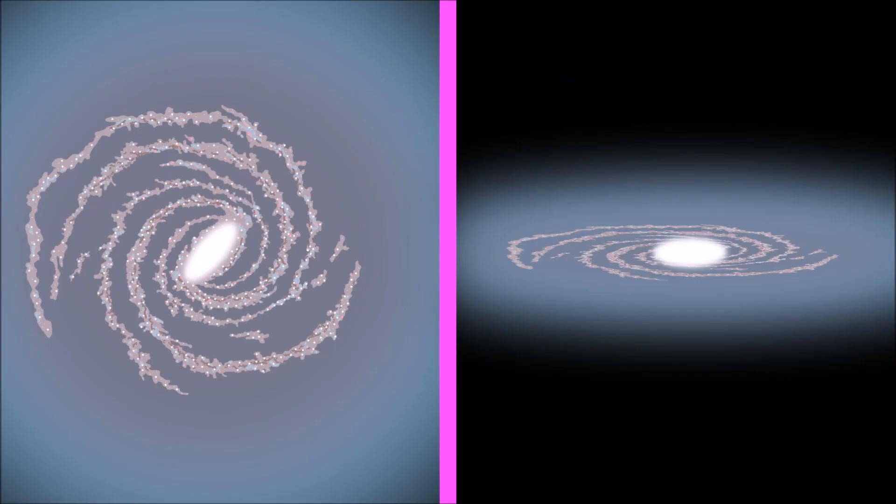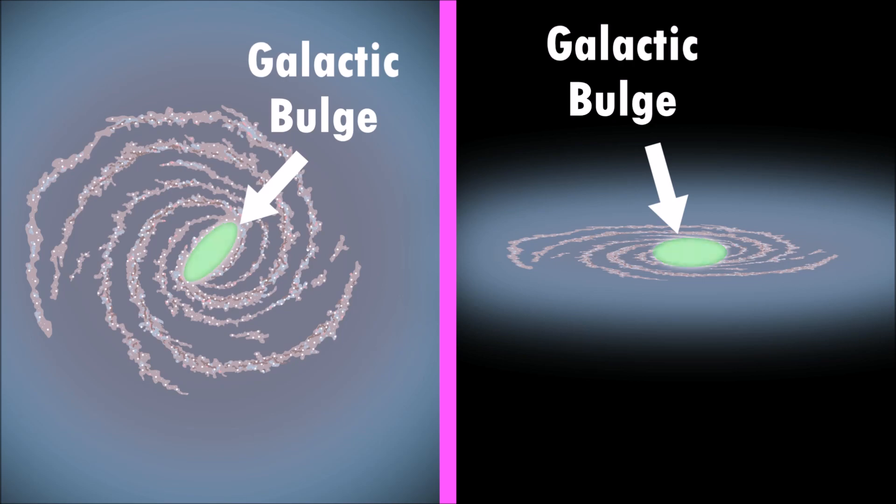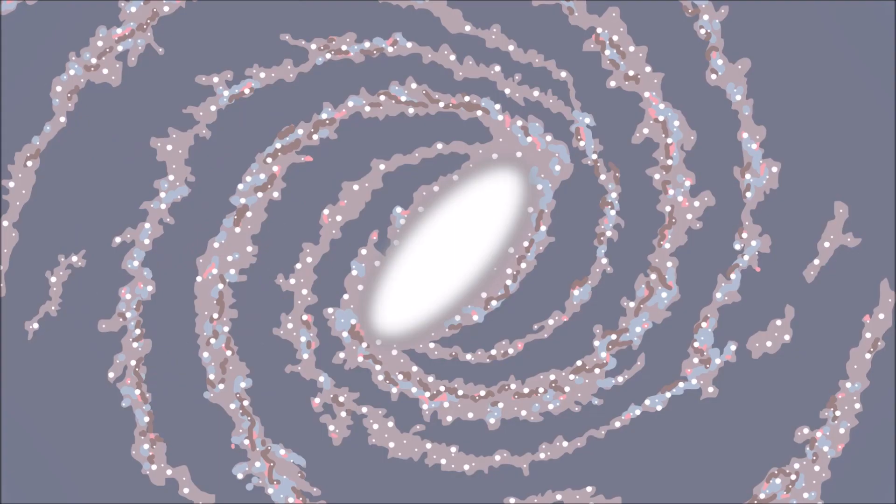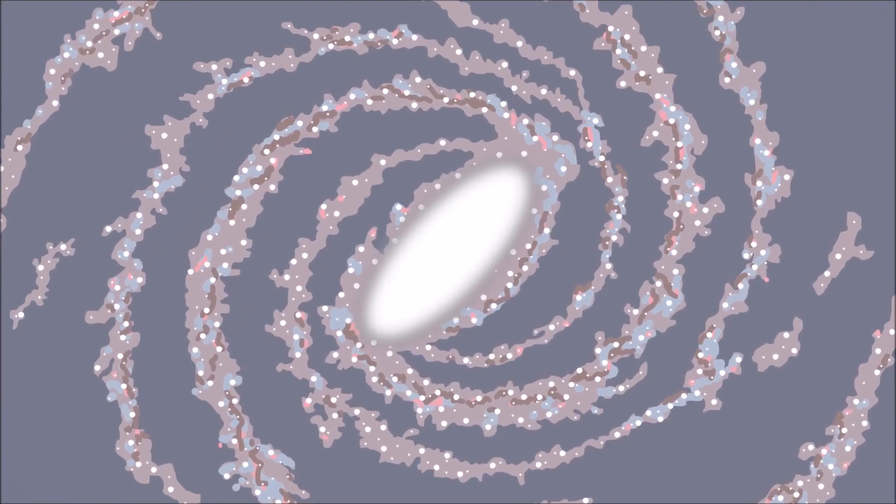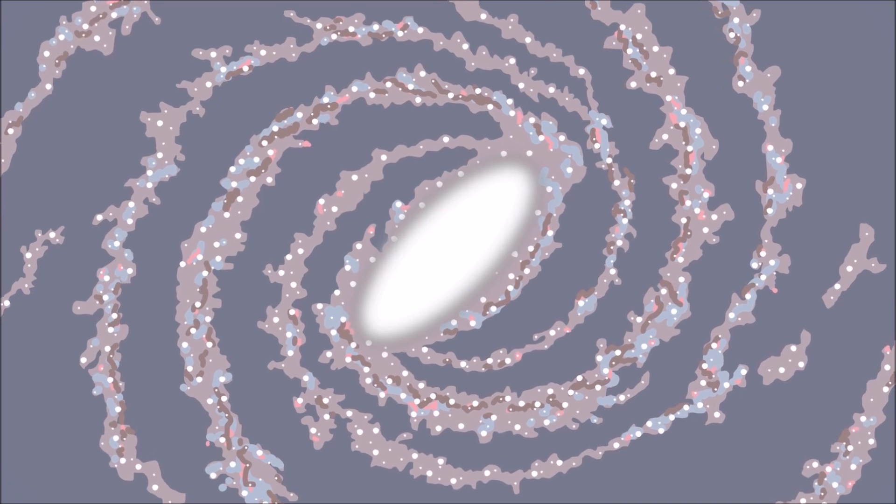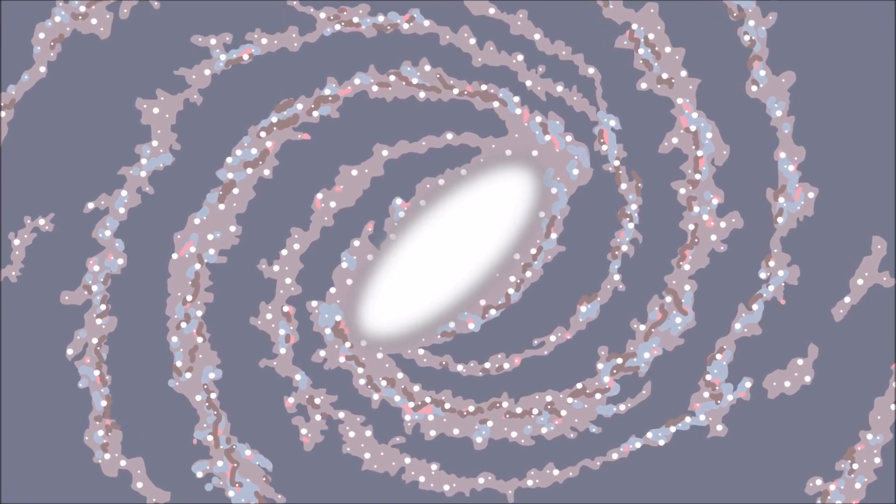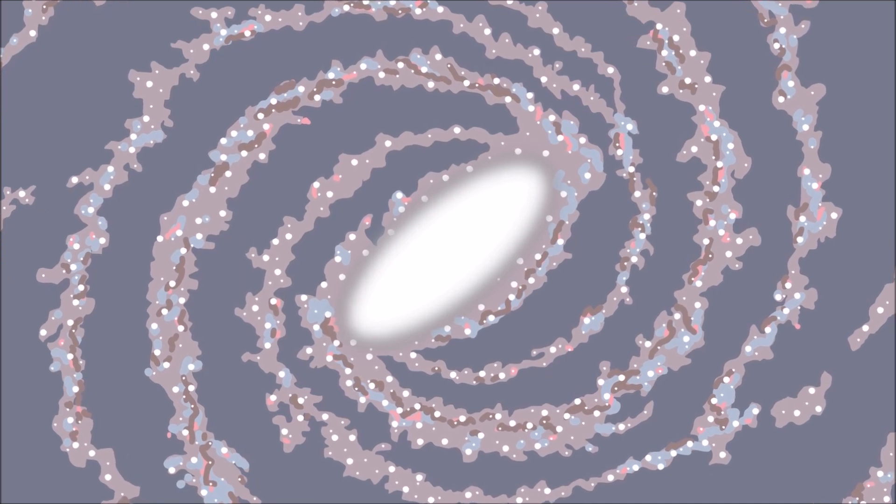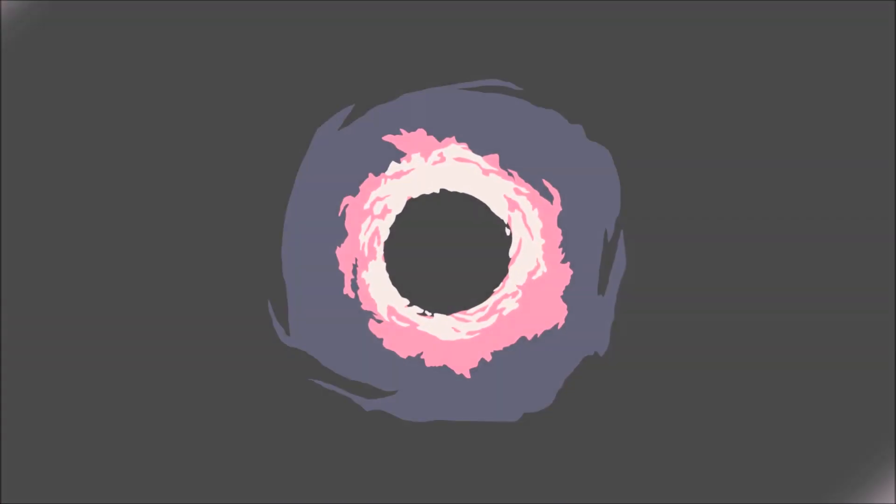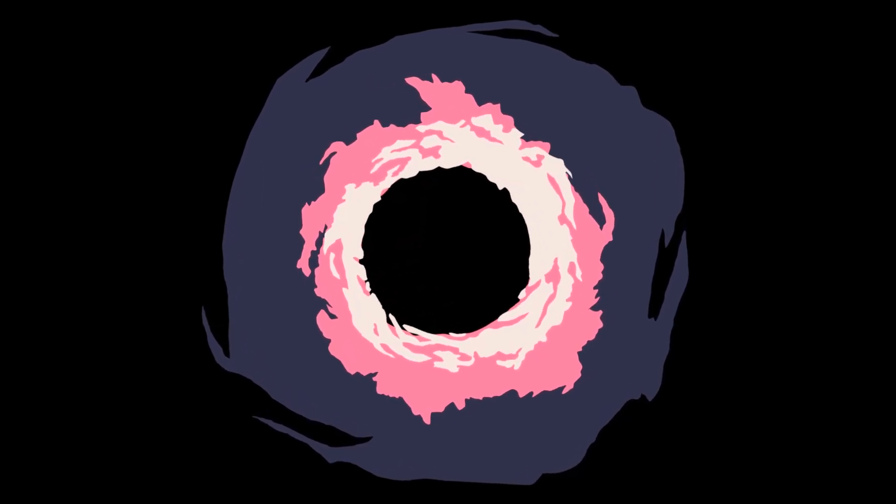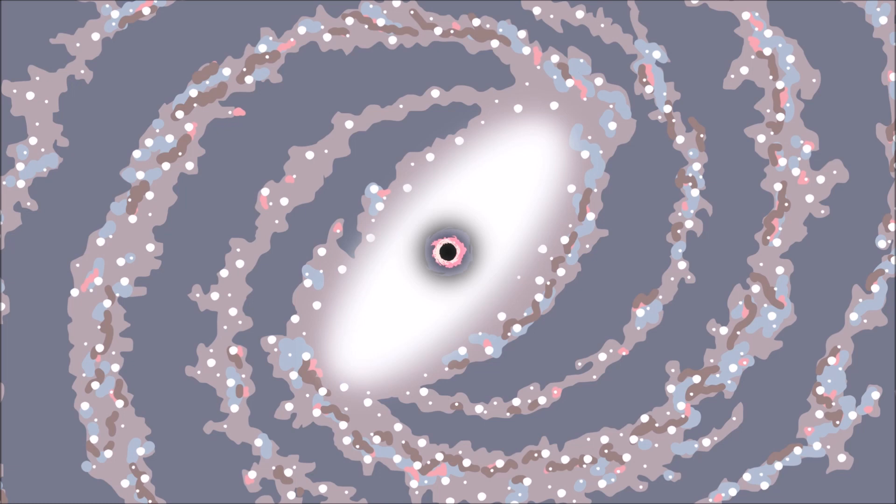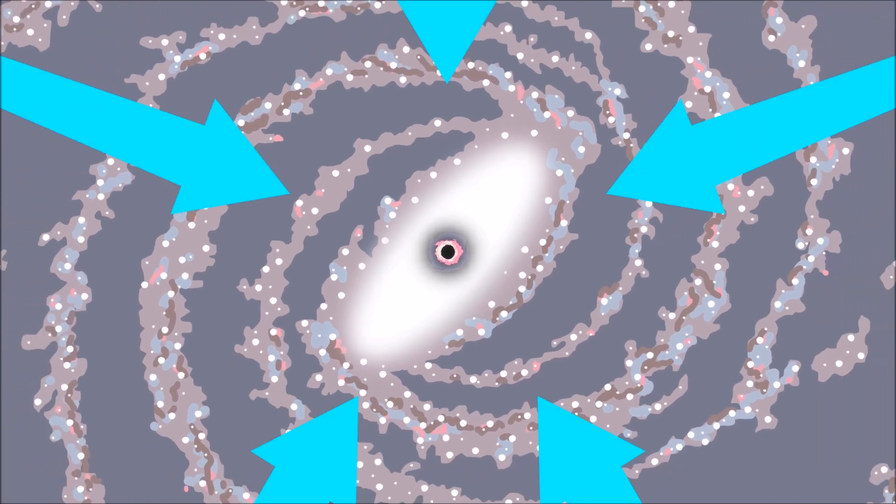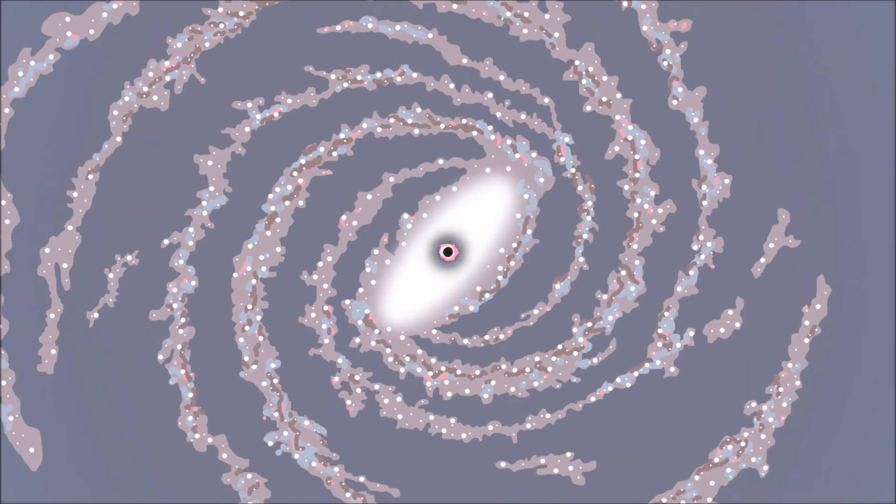The disk orbits around the galactic bulge! The galactic bulge is at the center of the Milky Way and is full of stars and a large amount of thick gas and dust! In the middle of the galactic bulge is a black hole! The Milky Way is held together by the gravitational force of this black hole!